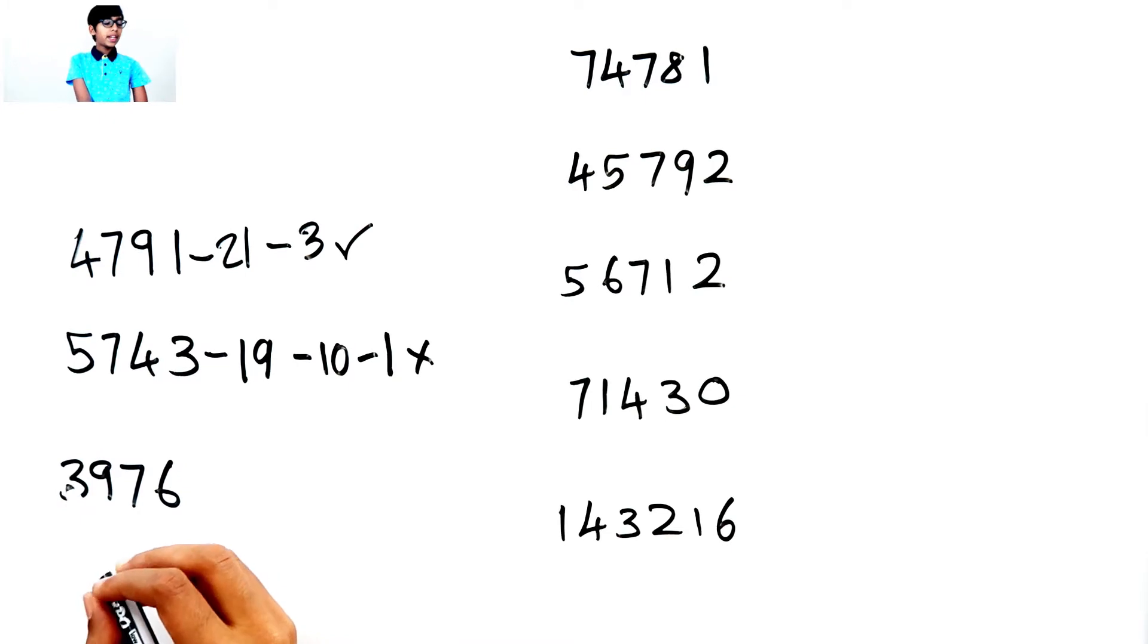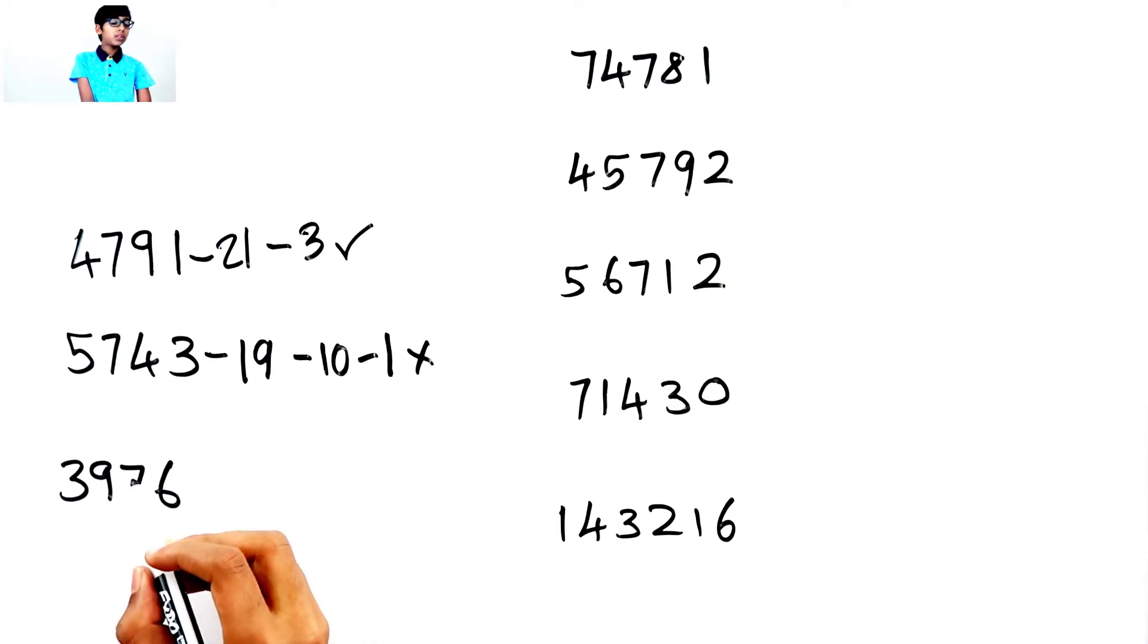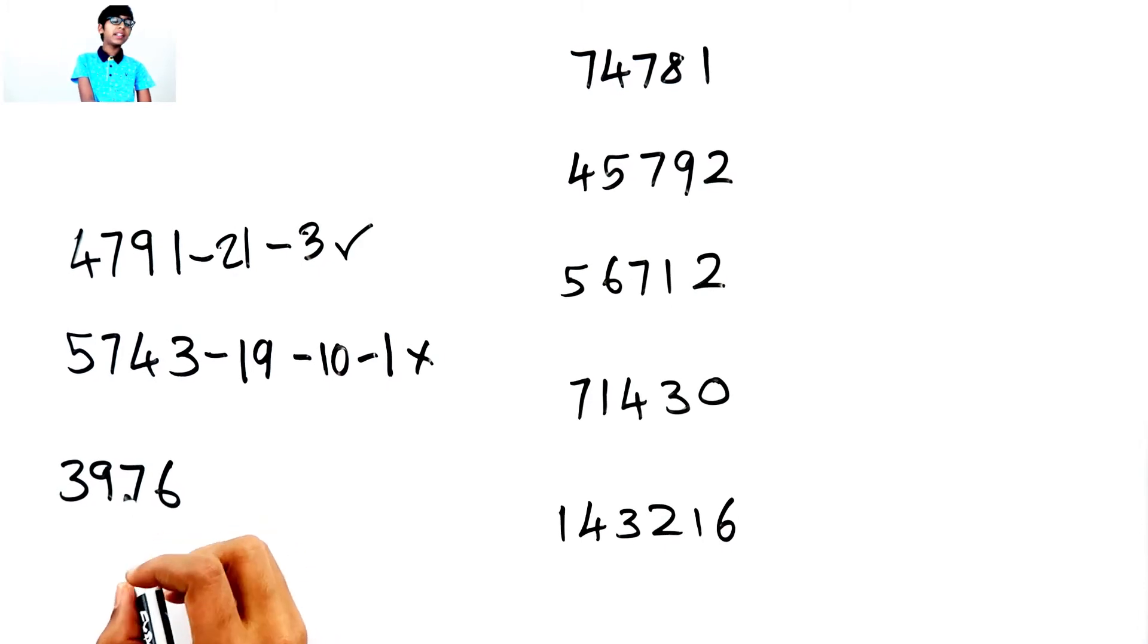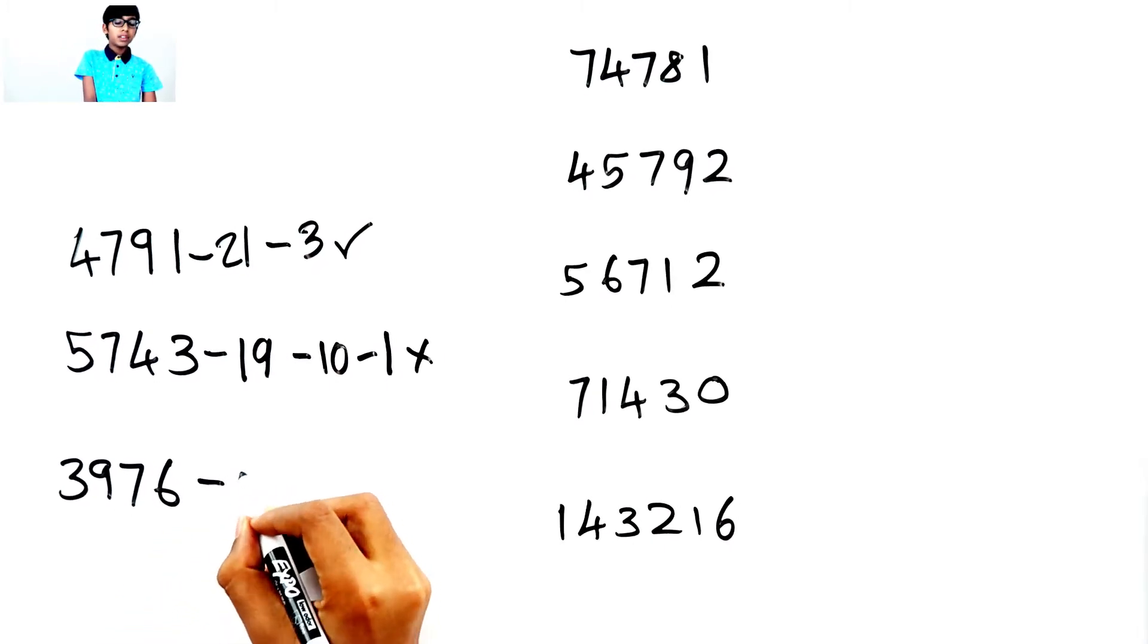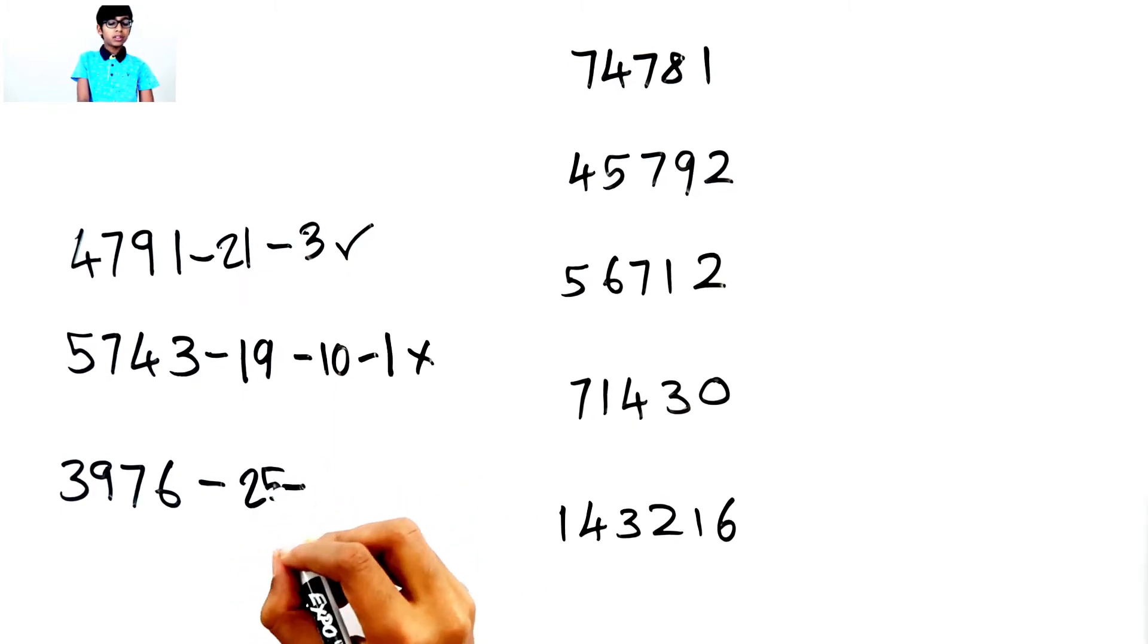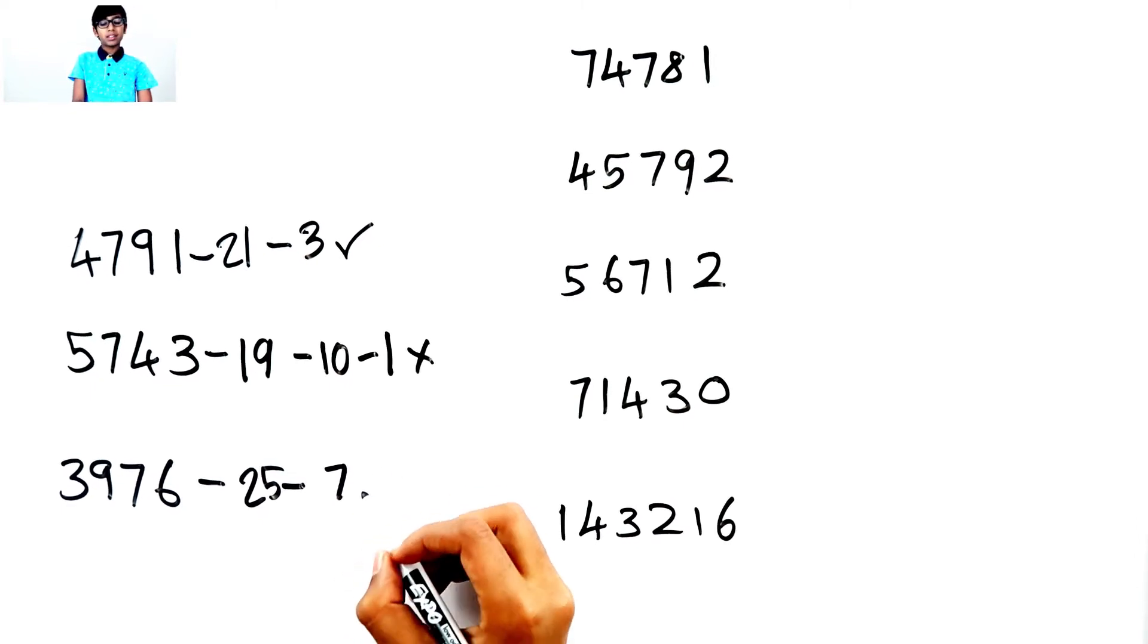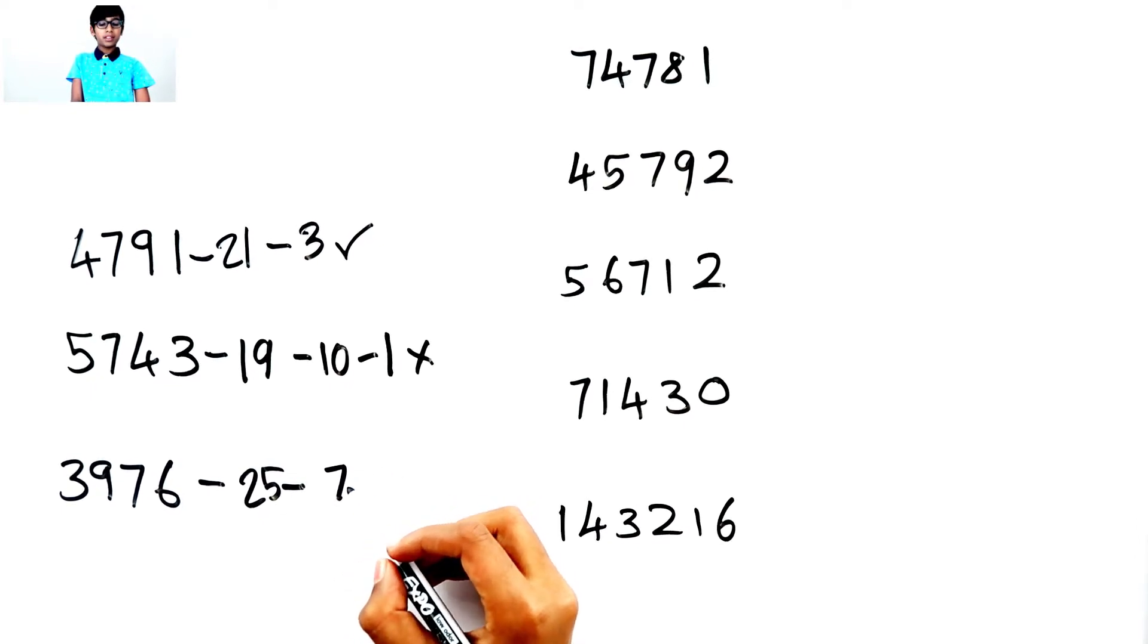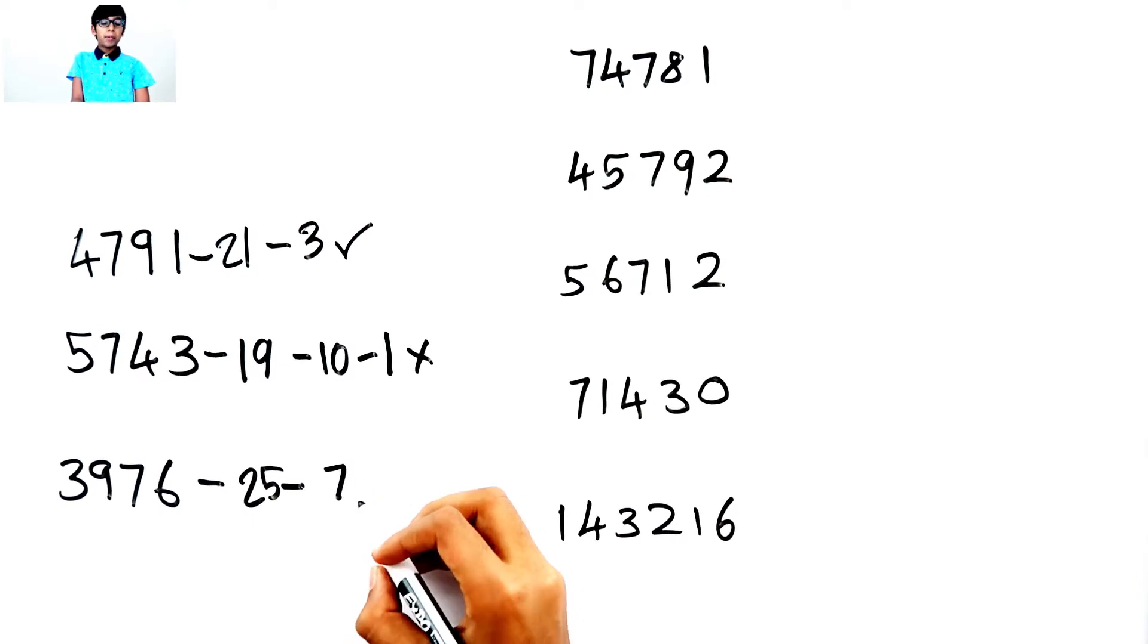Next, 3 plus 9 is 12. 12 plus 7 is 19. 19 plus 6 is 25. So, 25. 2 plus 5 is 7. That means this number cannot be divided by 3.